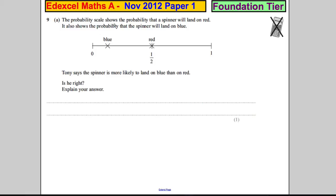Question 9. The probability scale shows the probability that a spinner will land on red. It also shows the probability that the spinner will land on blue. Tony says the spinner is more likely to land on blue than on red. Is he right?